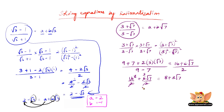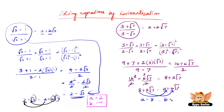Now let us equate 8 + 3√7 to a + b√7. Comparing coefficients, a = 8 and b = 3. Therefore a = 8 and b = 3.